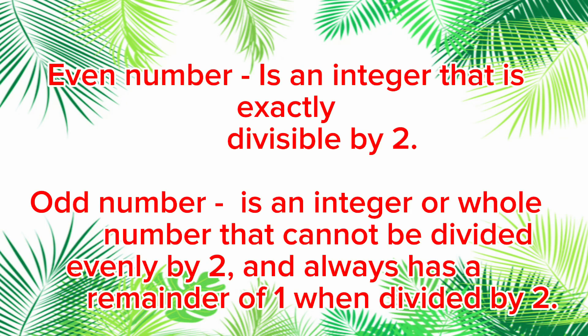Let's summarize. What is an even number? It is an integer that is exactly divisible by 2, while an odd number is an integer or whole number that cannot be divided evenly by 2 and always has a remainder of 1 when divided by 2.